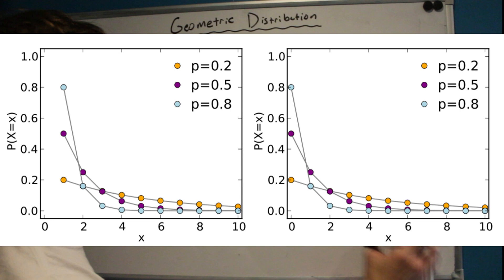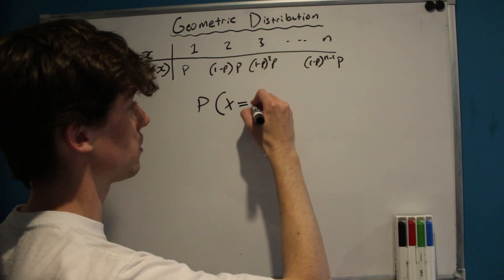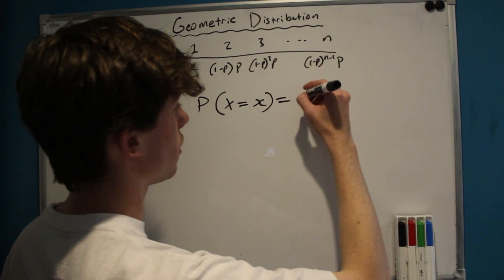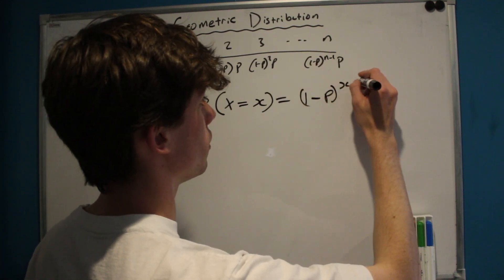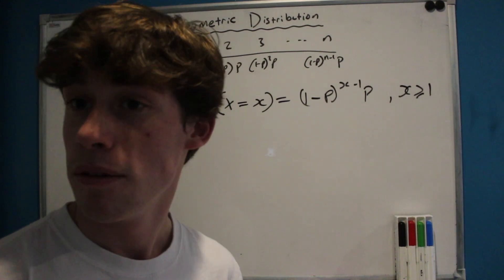The geometric distribution is actually often taken as one of two discrete probability distributions. The one we're looking at concerns the number of Bernoulli trials needed to reach a success. However, some people take it as the number of failures before the first success, in which case it starts at zero. To convert, we'd subtract 1 from the expected value and leave the variance unchanged, since subtracting a constant from a random variable does not affect its spread. So the PMF is P(X=x) = (1-p)^(x-1)·p for x ≥ 1.